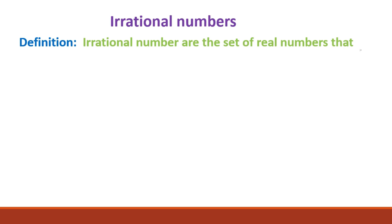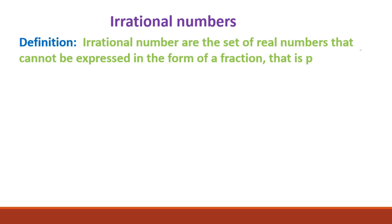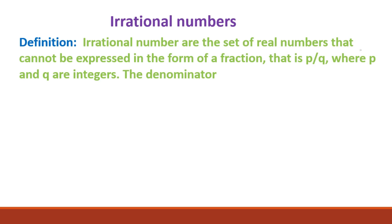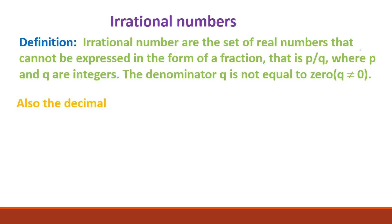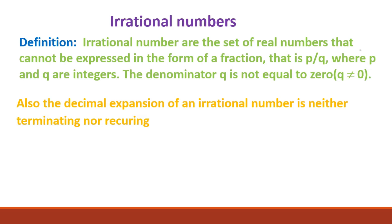Irrational numbers are the set of real numbers that cannot be expressed in the form of a fraction p by q, where p and q are integers and the denominator q is not equal to zero. Also, the decimal expansion of an irrational number is neither terminating nor recurring — it has no repeating pattern.